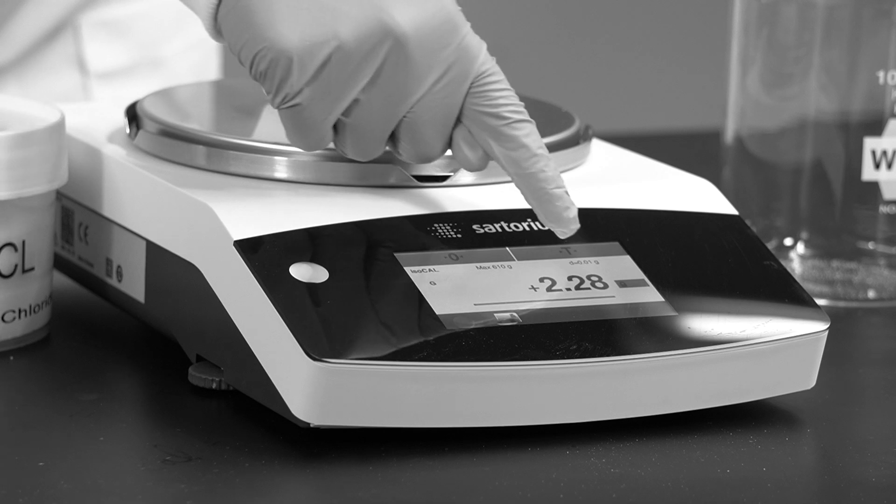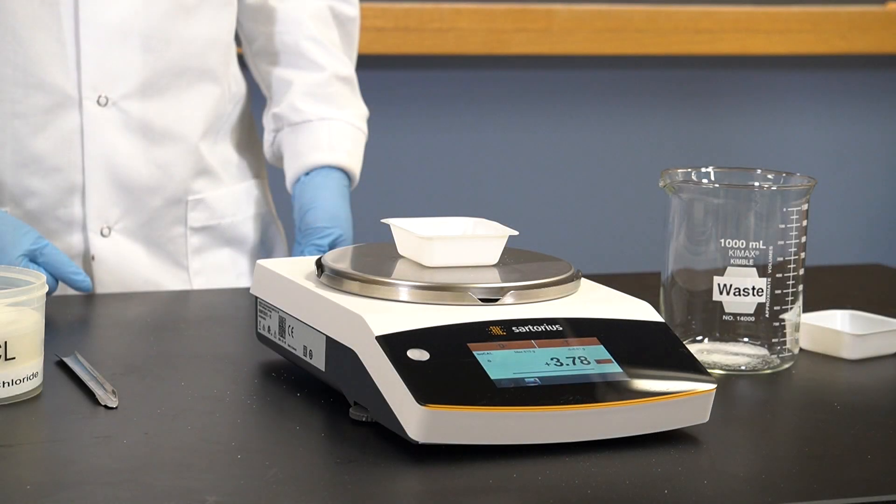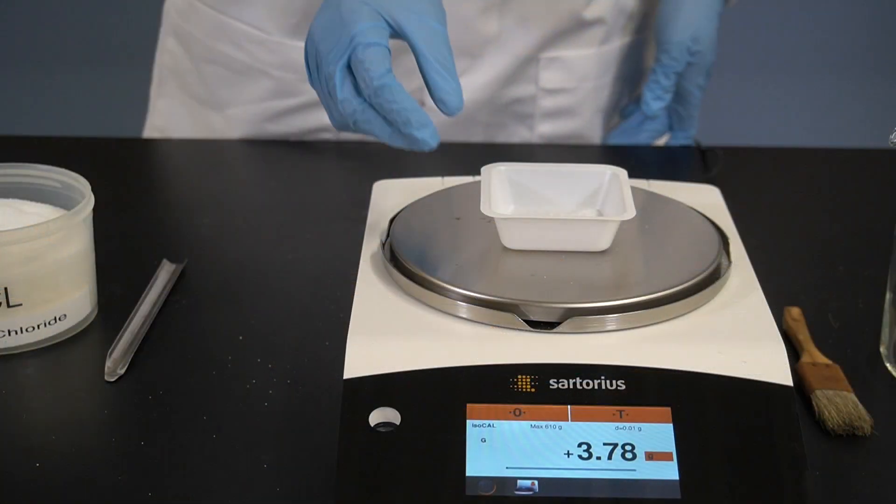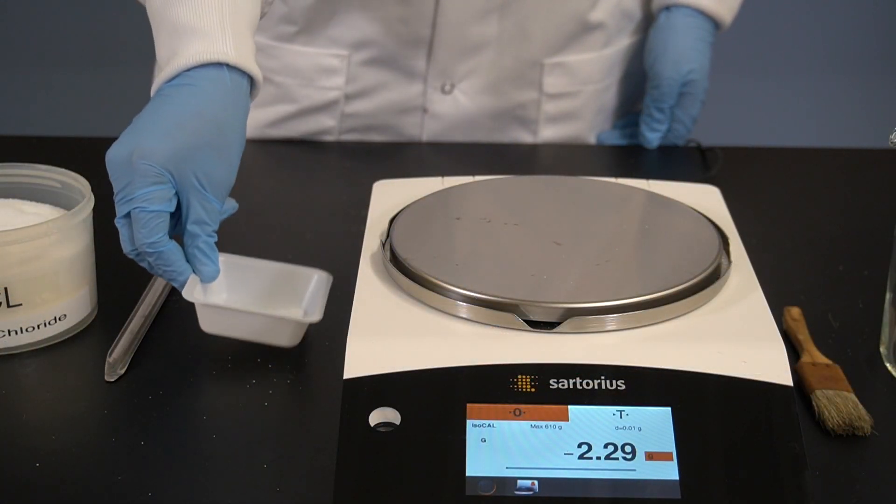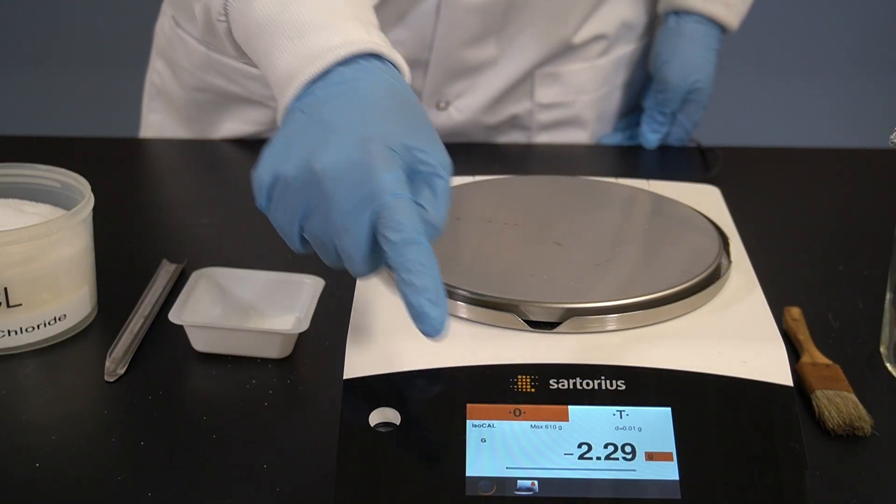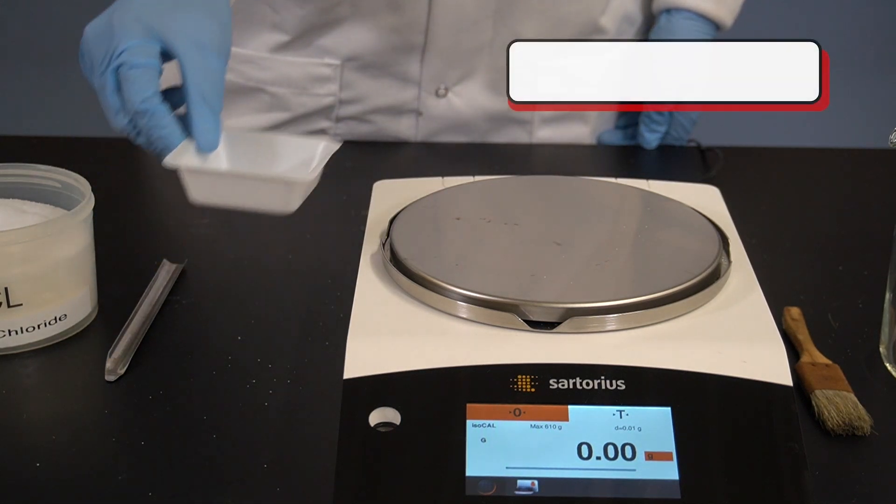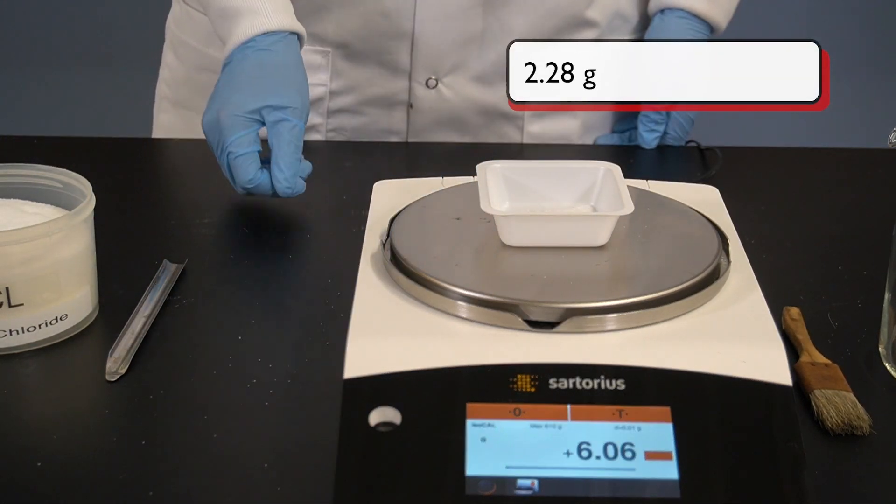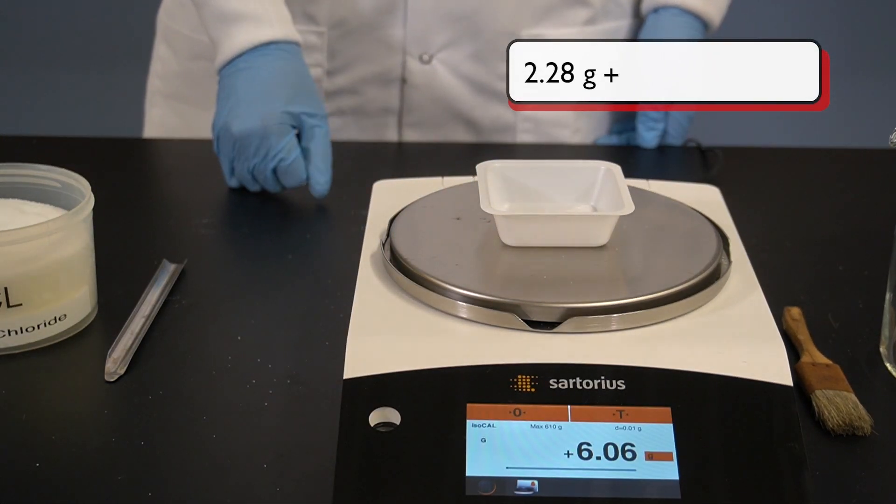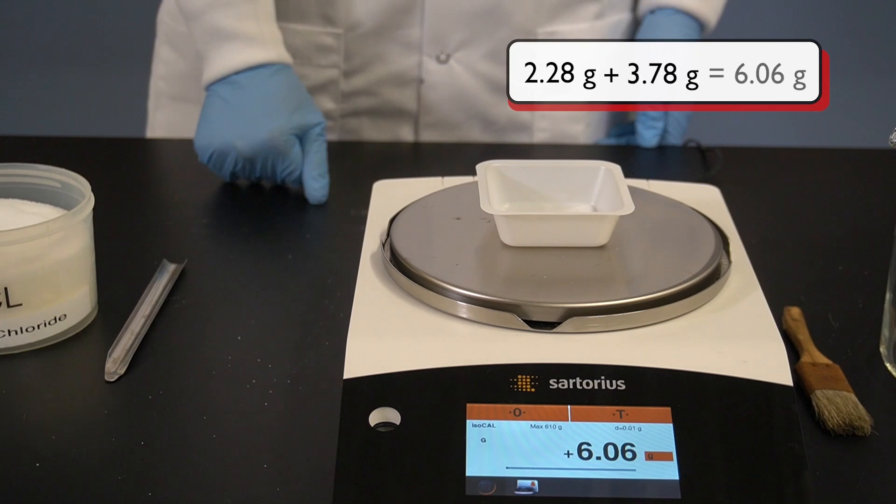As we have tared the balance with the weighing boat, this 3.78 grams is the mass of NaCl. If we were to tare the balance again with nothing on the pan, we can see that the total mass of the boat, 2.28 grams, plus the NaCl, 3.78 grams, is 6.06 grams.